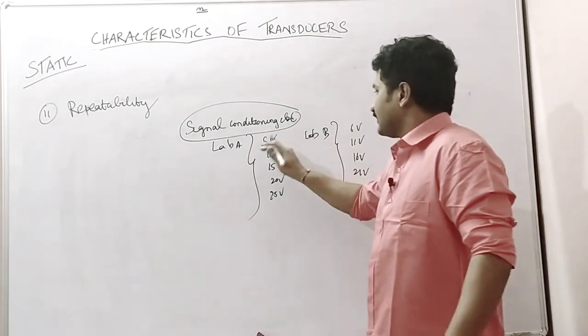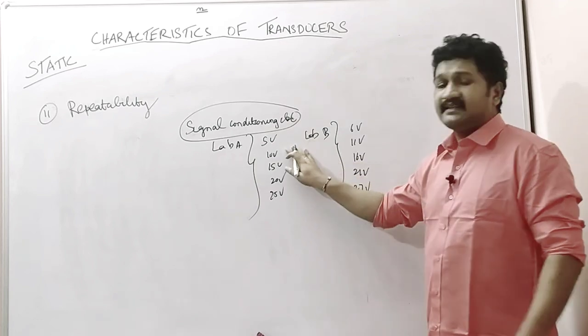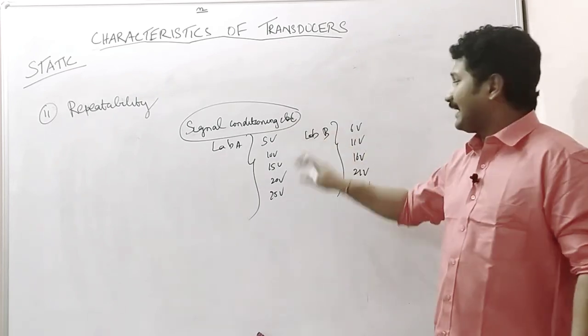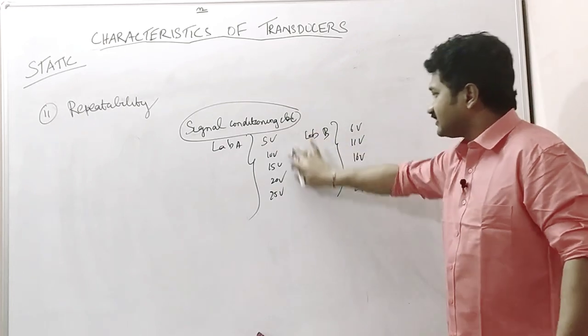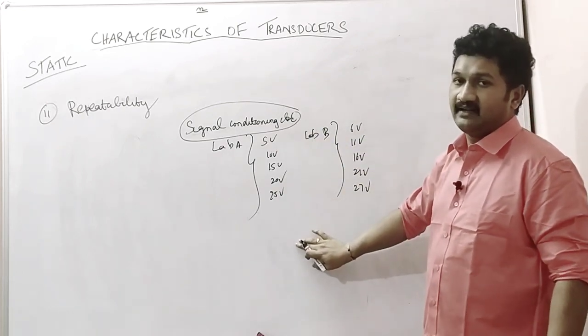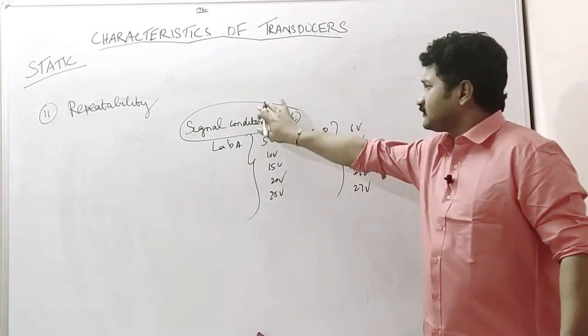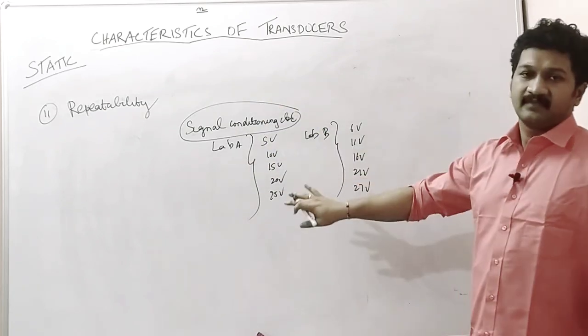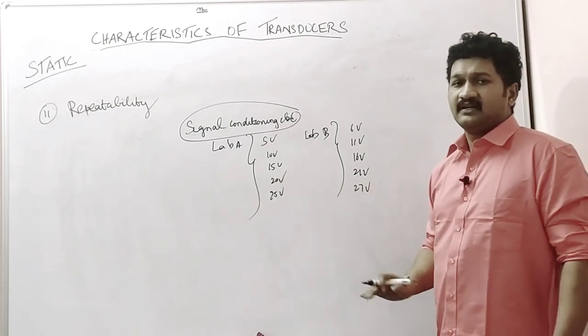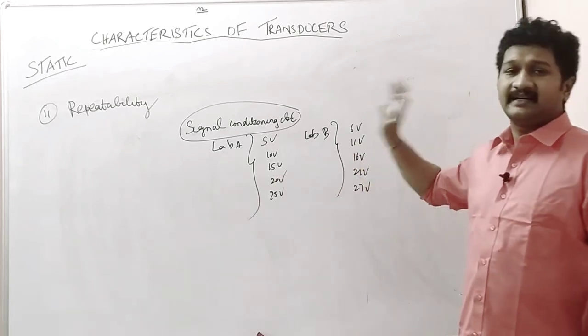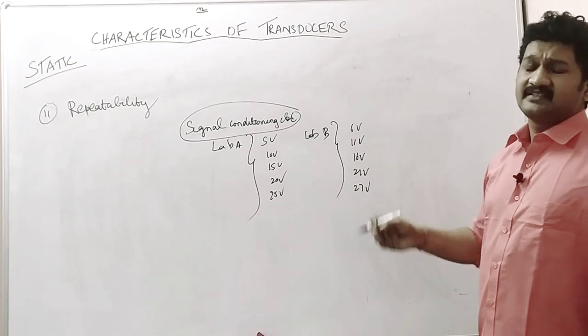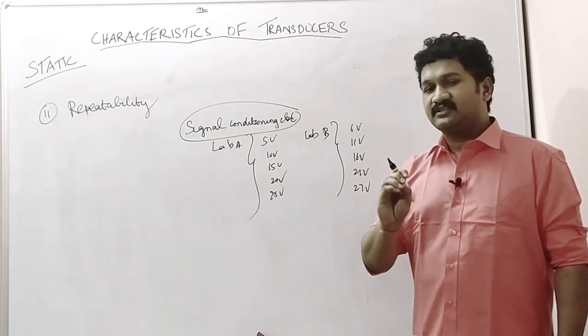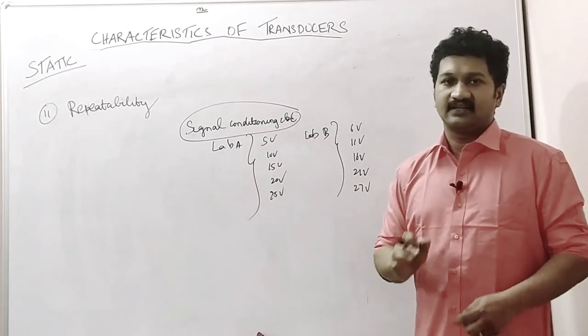If we have to maintain repeatability, the optimum conditions of temperature and pressure must be maintained wherever we go. In Lab B also, if the same environmental conditions are maintained, and even the power supply used for the signal conditioning circuit does not deviate in both labs, then repeatability will be maintained. This is one of the important characteristics of a transducer that has to be taken into consideration. Thank you.